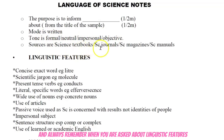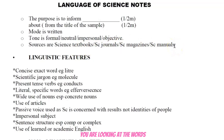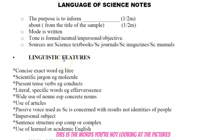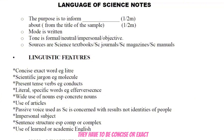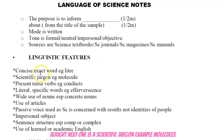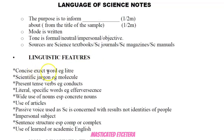Now let's move on to linguistic features. Please remember: when you are asked about linguistic features, you are looking at the words. You are not looking at pictures, headings, or bold print — those are not words. Linguistic features are about the words. First: concise or exact words, for example 'litre.' Next: scientific jargon, for example molecules, photosynthesis, masticated.